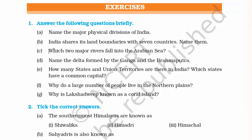Question three: Which two major rivers fall into the Arabian Sea? The only two rivers that flow towards the western side are Narmada and Tapi. A good mnemonic is 'TN' — T for Tapi, N for Narmada — like Tamil Nadu.